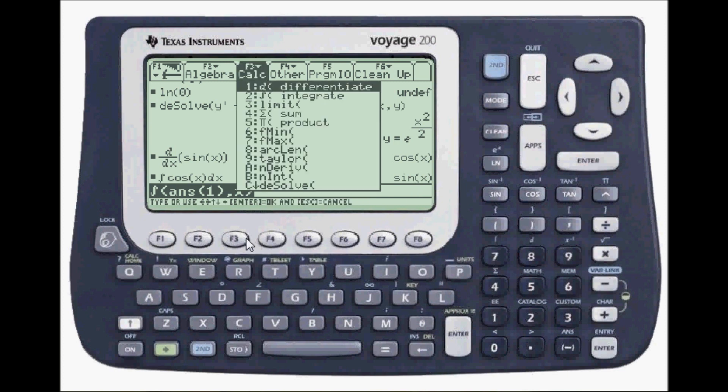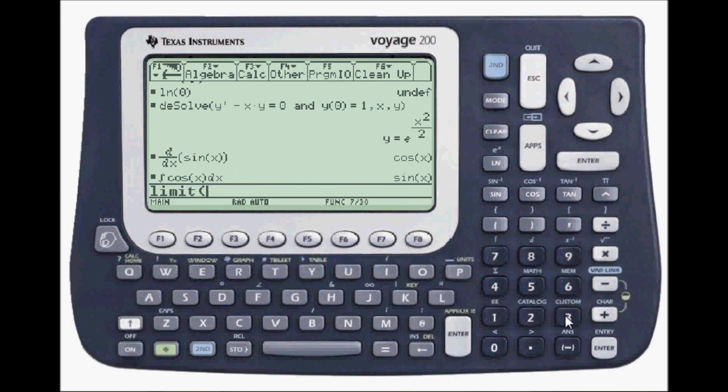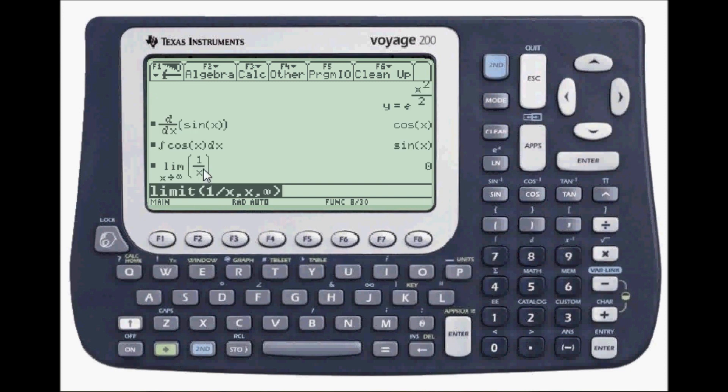After this, let's do limits. And F3, limits is number three. I'm going to do a limit of one over x. And the variables x. As x approaches infinity, infinity is over j. Close parenthesis. Press enter. As x approaches infinity, this whole thing, one over x, goes to zero.